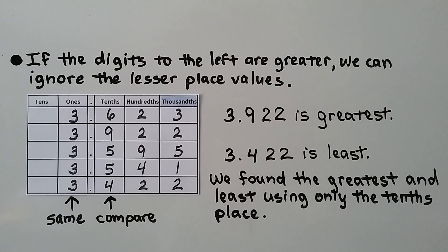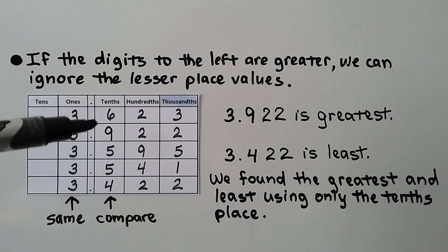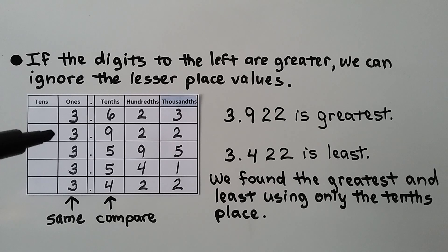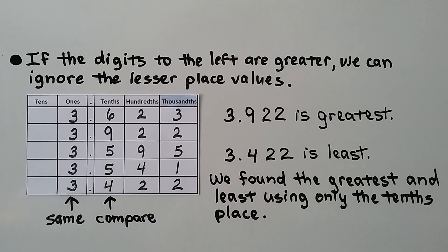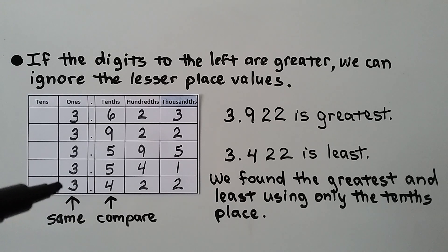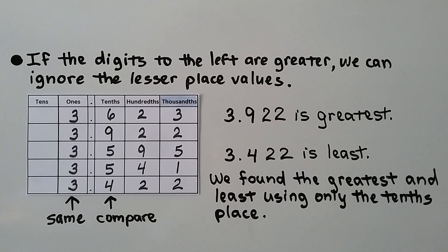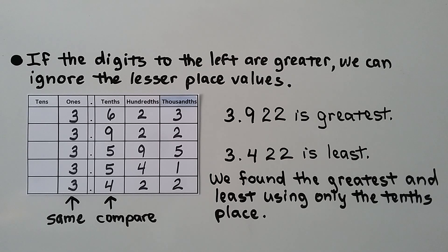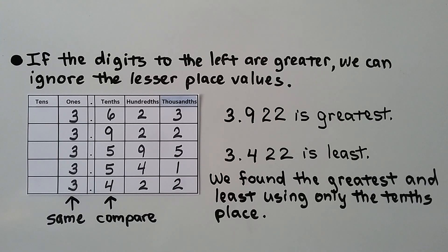If the digits to the left are greater, we can ignore the lesser place values. Comparing all these decimal numbers, the ones are all the same, but when we get to the tenths, a 9 stands out — that's the greatest, so 3 and 922 thousandths is the greatest. One has a 4 in the tenths place, the fewest tenths, so 3 and 422 thousandths is the least. We found the greatest and least using only the tenths place — we didn't even need to look at the hundredths or thousandths.